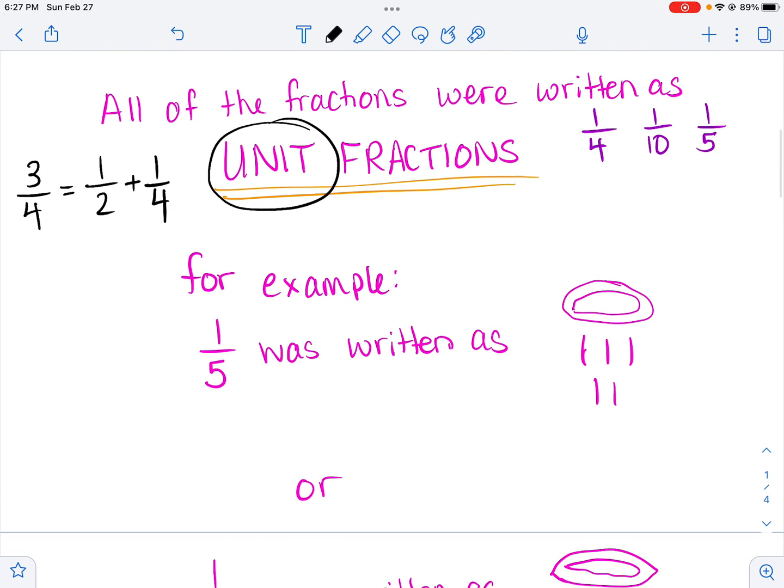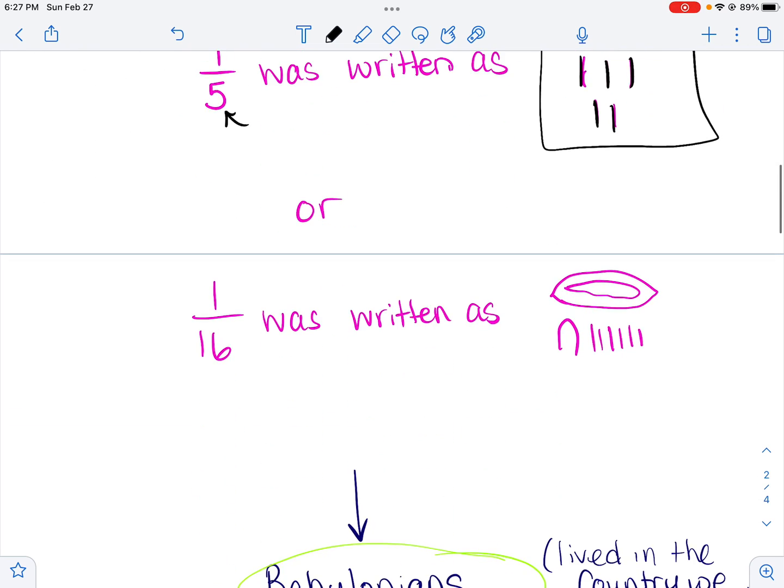So for example, using their hieroglyphs, if you wanted to write the number one-fifth, you would put this symbol on top, like a mouth. I think it is. Represents part. And then the numbers below it would represent the denominator. So you'd put the five ones. So this symbol right here would represent one-fifth. Or let's say you wanted to write one-sixteenth. You could use the symbol for ten, along with six ones. So this right here would represent one-sixteenth.